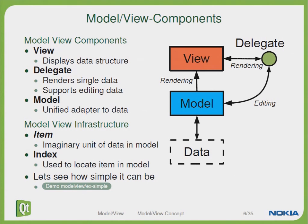On top we will see the view, which is responsible for displaying the data structure. The delegate will be responsible for rendering the data as well as for editing. And the model will be the interface to our data structure. When talking about ModelView infrastructure we will have to learn some terms. An item is an imaginary unit of data within our model, and an index is a unique identifier to locate the data within our model.